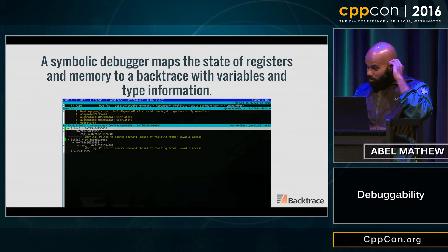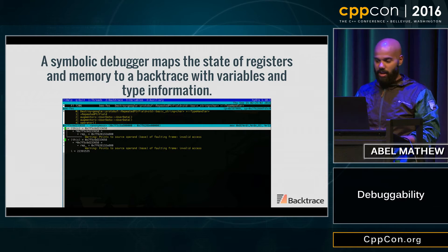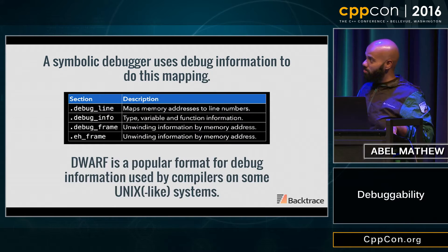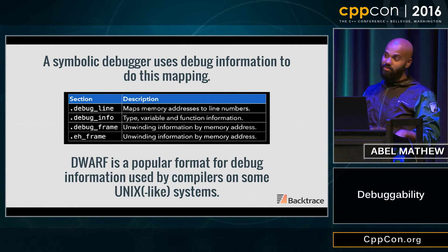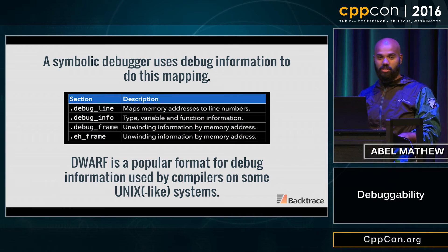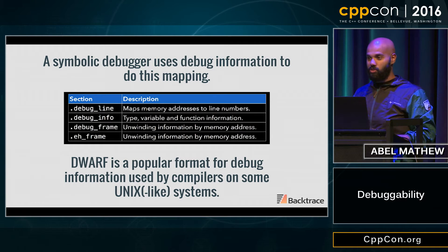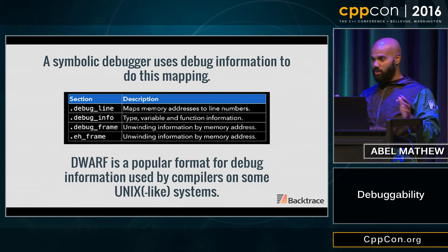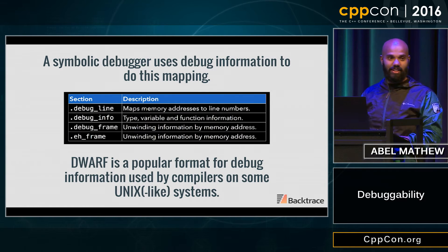A symbolic debugger — which GDB is — will map the state of registers in memory back to a backtrace of variables and type information. It does that with a very convoluted process. If anyone's ever looked at the DWARF specification, it's like 200 pages long, and there's tons of information as to why that is. It's Turing complete, it's really complicated, and it can really be a pain, especially if you work with debuggers.